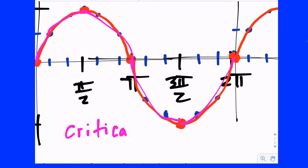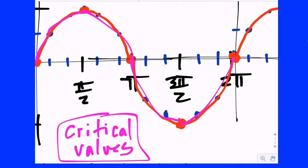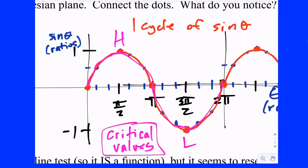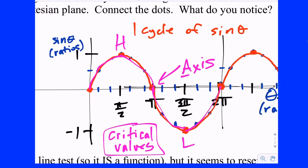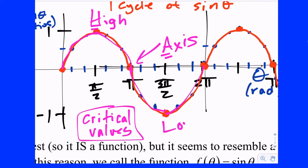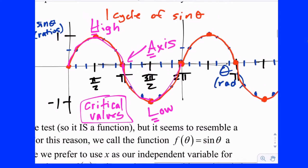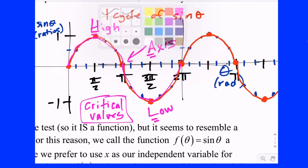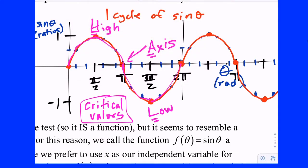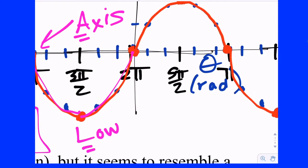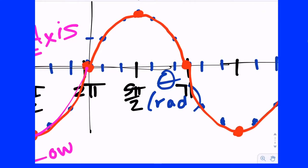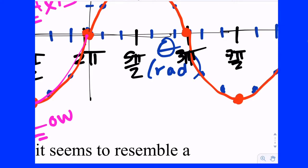These are going to be called your critical values: H for high points, A for axis points, and L for low points. If you know where those high, axis, and low points are and their x values, you can continue generating the graph. Counting by the quarter cycle interval of pi/2: 1pi/2, 2pi/2, 3pi/2, 4pi/2. The next high point would be 5pi/2. Back on the axis is 6pi/2 which simplifies to 3pi. The next low point is 7pi/2, and 8pi/2 — which is 4pi — would be two full rotations.